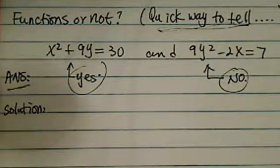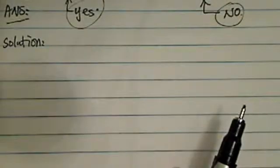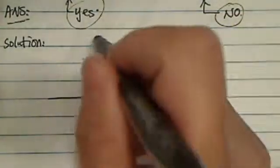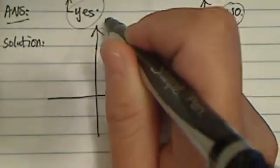If you want to learn how to tell quickly, watch on. So the idea of how to tell a function or not, let's give you an analogy. Instead of this vertical line test and a horizontal line test is really frustrating for a lot of students.